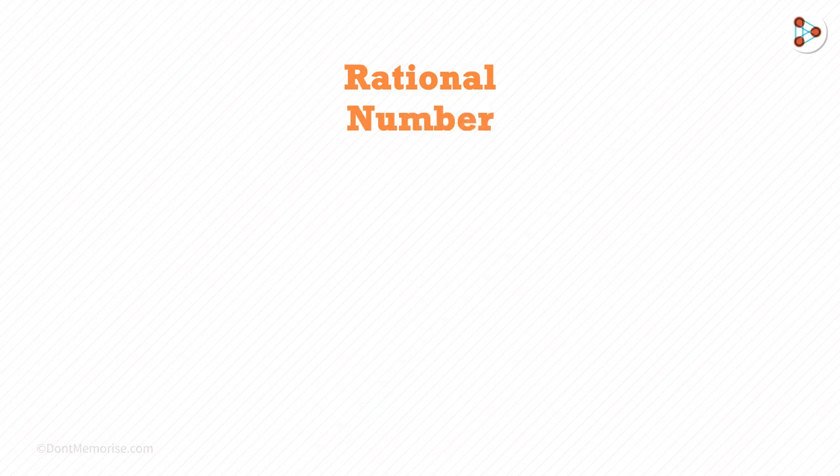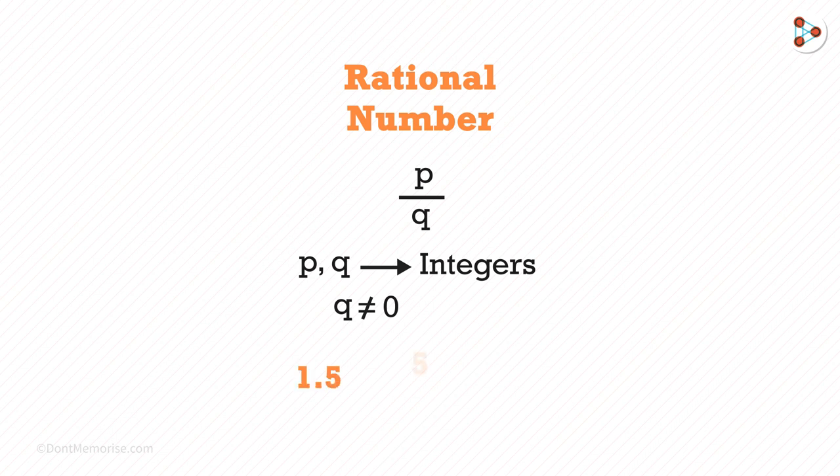A rational number is a number which we can write in the P over Q form. P and Q are integers and the value of Q cannot be equal to 0. The examples of rational numbers are 1.5, 5 over 6, negative 7 over 12 and so on.